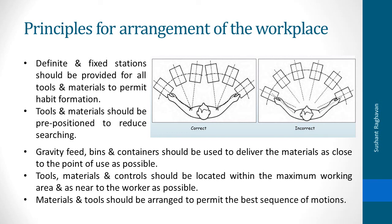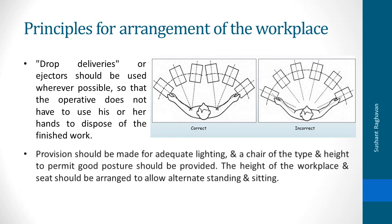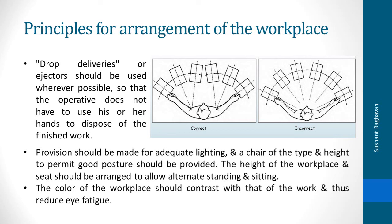Materials and tools should be arranged to permit the best sequence of motions. Drop deliveries or injectors should be used wherever possible so that the operative does not have to use his or her hands to dispose of the finished work. Provisions should be made for adequate lighting and a chair of the type and height to permit good posture. The height of the workplace and seat should be arranged to allow alternate standing and sitting. The color of the workplace should contrast with that of the work to reduce eye fatigue.